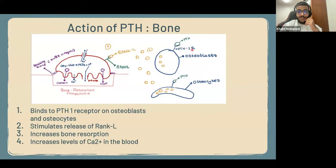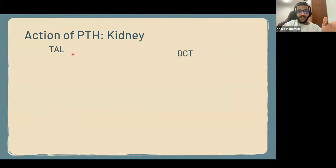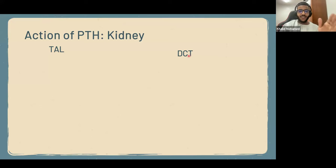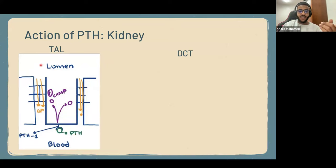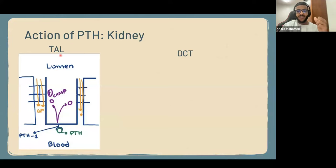The PTH1 receptor is also present in two parts of the kidney: the thick ascending loop of Henle and the distal convoluted tubule. When PTH binds to the receptor in the thick ascending loop, it causes the formation of cAMP, a secondary messenger, which stimulates the reabsorption of calcium. This means calcium is reabsorbed from the lumen back into the blood rather than being lost in urine, thereby increasing blood calcium levels through paracellular reabsorption.